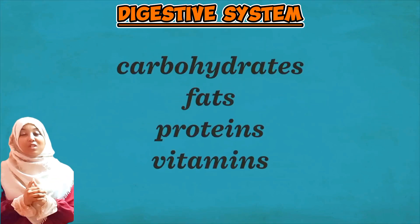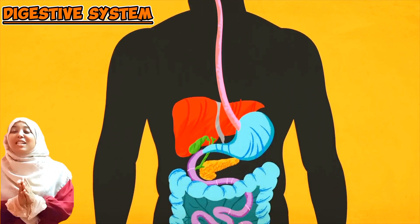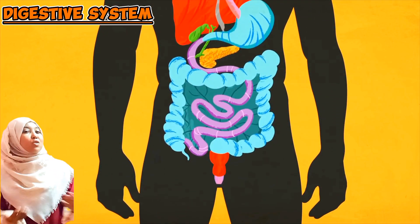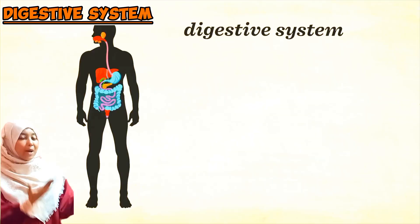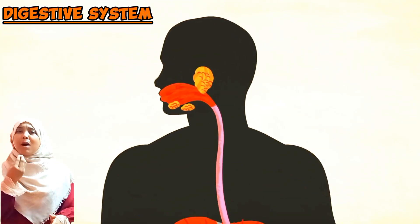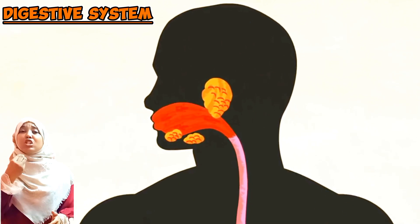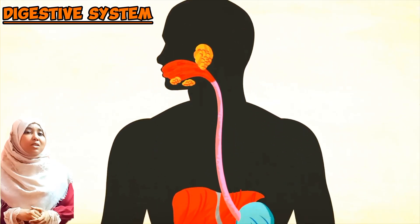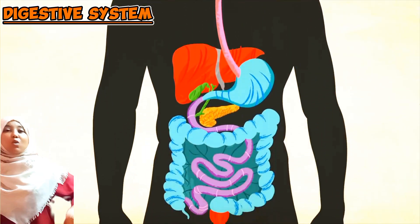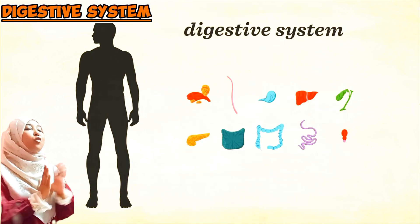The digestive system consists of all organs through which food substances pass. The starting point is the mouth, where ingestion happens in the case of humans. The end point is the anus, where food is eliminated from the body.